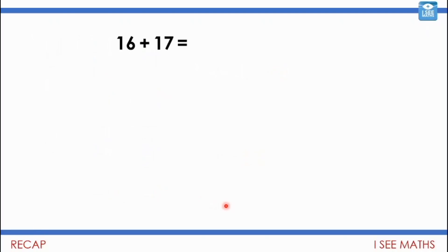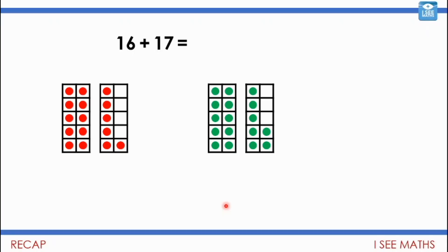I wanted to look at how we can play with numbers a little bit like that to help us calculate. So for 16 plus 17, you can add the 10s and add the 1s, but that's not my favourite method. My favourite thing is to break the 16 and 17 down into two 15s. Double 15 is 30, and then I just need to think how much more than 30 it will be — 33.